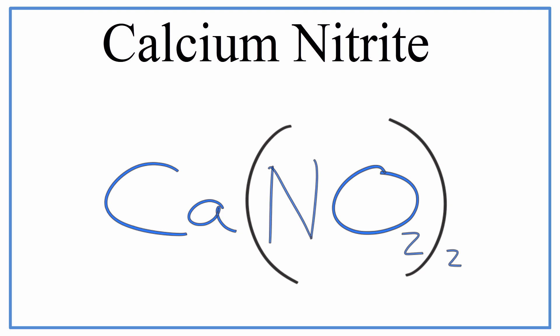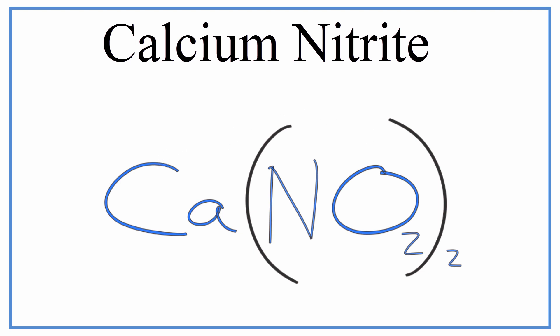The question is, is this the correct answer? We need to check ourselves. I'll put the charges back — we had a negative 1 here and a plus 2 here. Now I'll multiply: 2 times 1 is minus 2, and we can see that this minus 2 is going to cancel out the plus 2. That gives us a net charge of 0, which means we have the correct formula. So that is the correct formula for calcium nitrite.